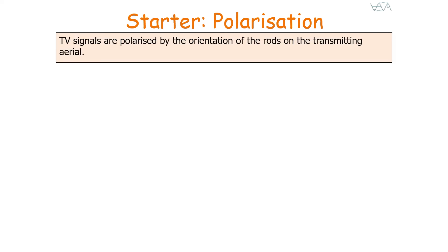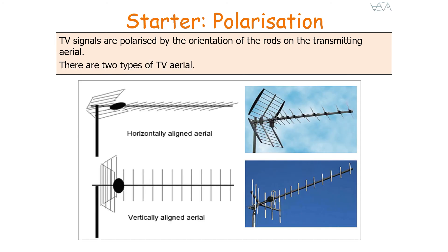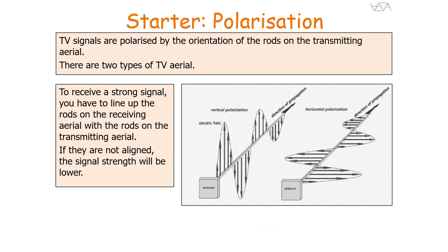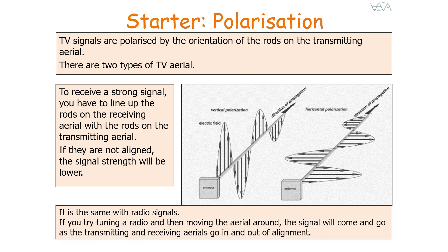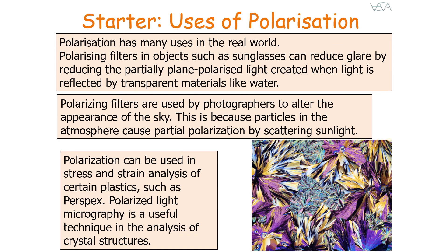TV signals are polarised by the orientation of the rods on the transmitting aerial. There are two types of TV aerial: horizontally aligned and vertically aligned. To receive a strong TV signal, you have to line up the rods on the receiving aerial with the rods on the transmitting aerial — if they are not aligned, signal strength will be lower. The same applies to radio signals: if you move the aerial around while tuning, the signal will come and go as the transmitting and receiving aerials go in and out of alignment.